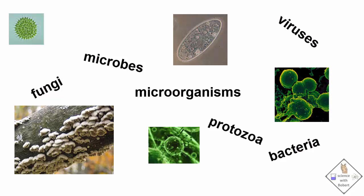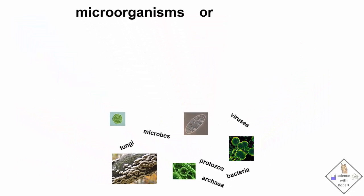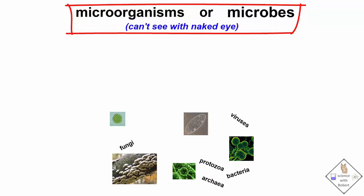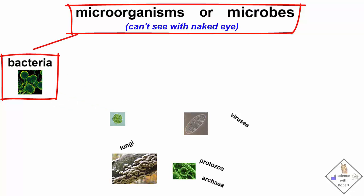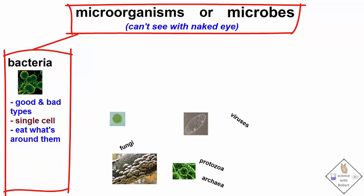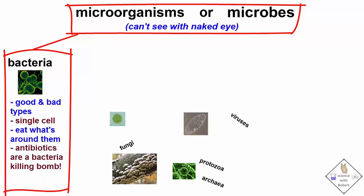Before we build our laser microscope, let's take a look at some of the things we might be seeing. Microbes and microorganisms refer to the same thing — extremely small creatures or organic packets that we just can't see with our naked eye. There is good and bad bacteria. Bacteria are single cells that eat what is around them. Antibiotics are like an atomic bomb for killing bacteria. Vitamin C works at killing bacteria too, but acts more like a bullet and gets destroyed in the process.